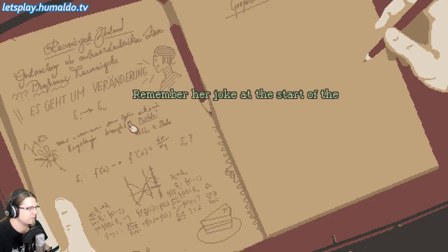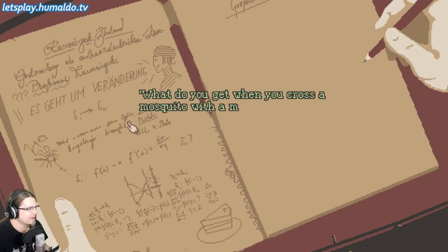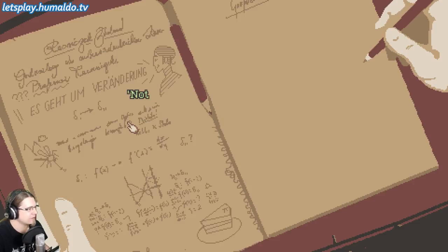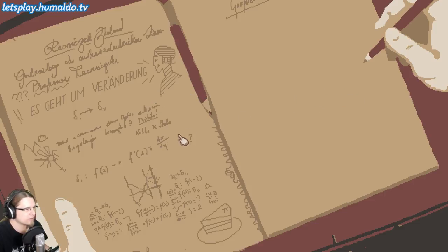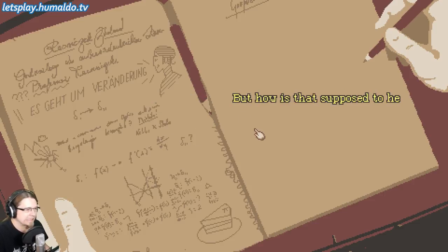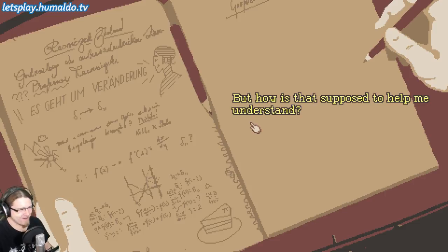Joke — remember her jokes at the start of the lesson? 'What do you get when you cross a mosquito with a mountain climber? Nothing. You can't cross a vector and a scalar.' I'm not math enough to understand this, but I suppose it's funny.